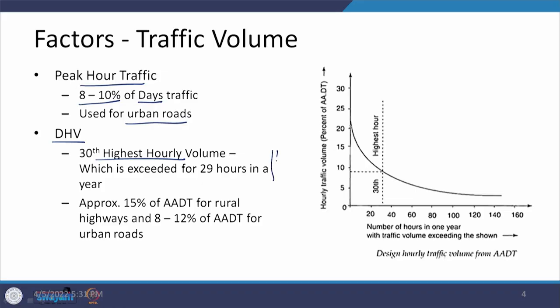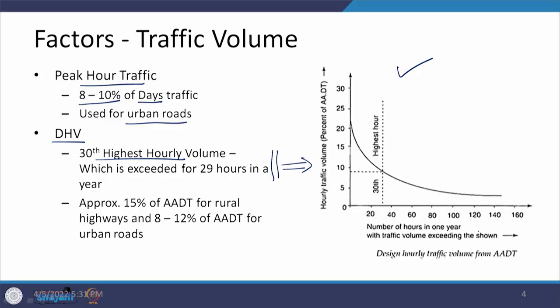To find this value, we collect traffic data for 24 hours a day continuously for 365 days in a year, then arrange them in descending order from highest to lowest, and see how many times a particular volume is exceeded in a year. We then create a graph with number of hours on the x-axis and traffic volume — given as a percentage of ADT or in absolute values — on the y-axis.